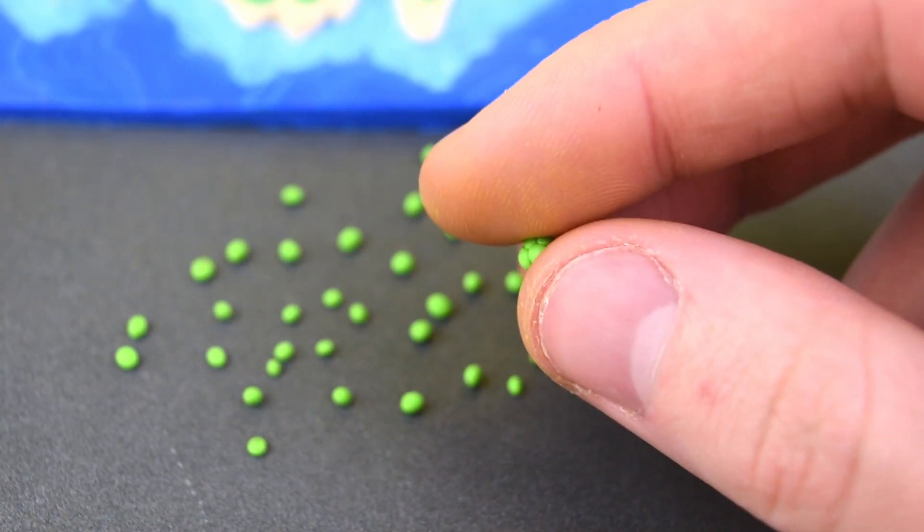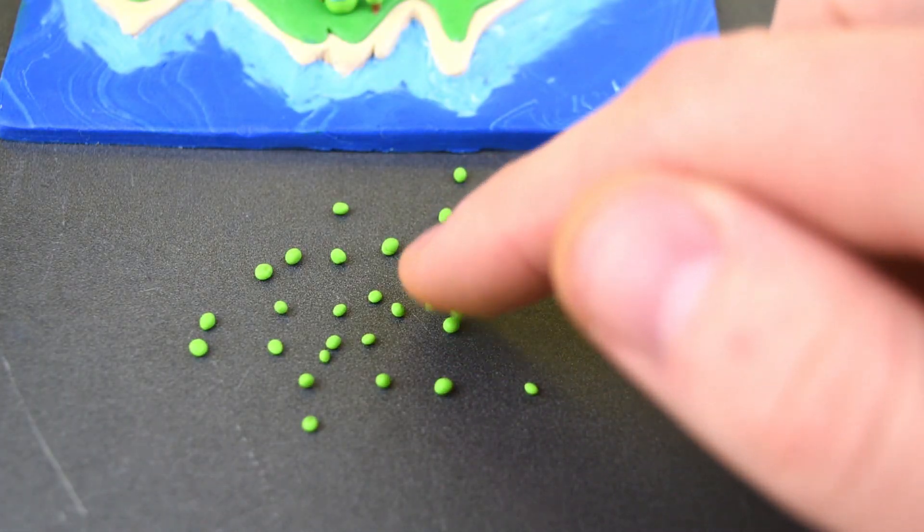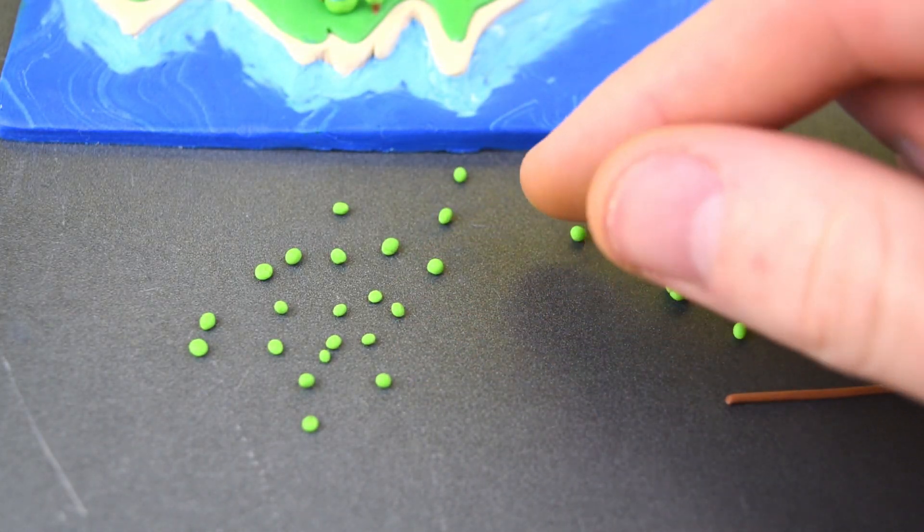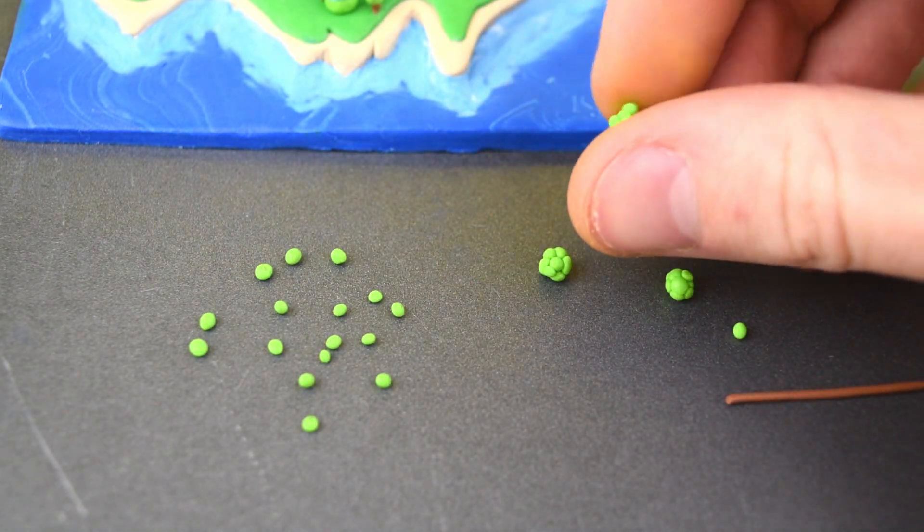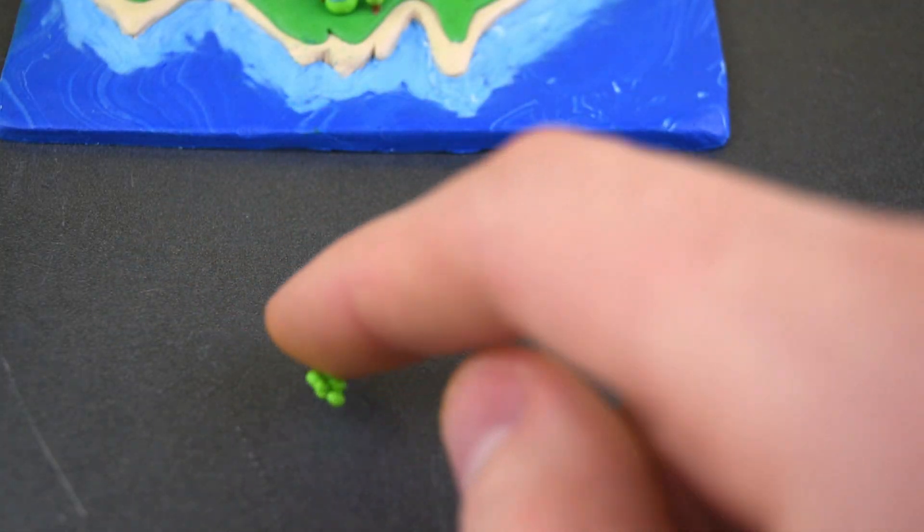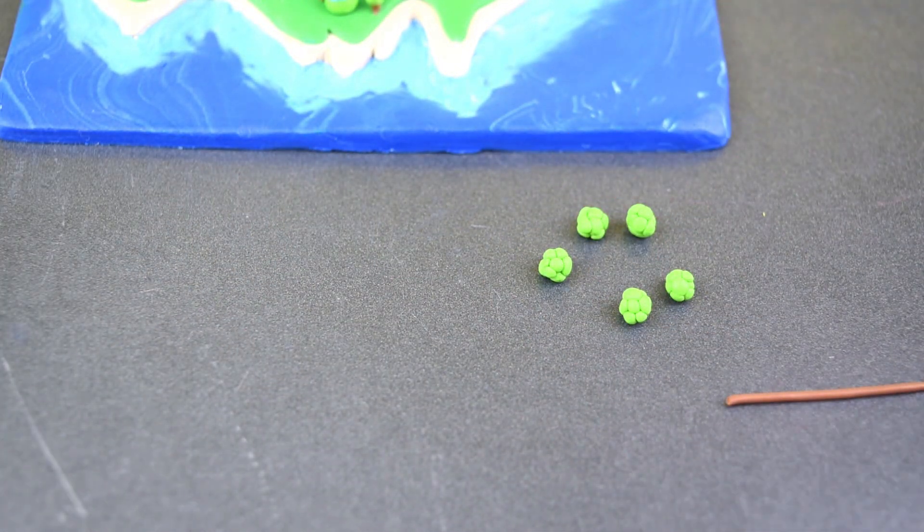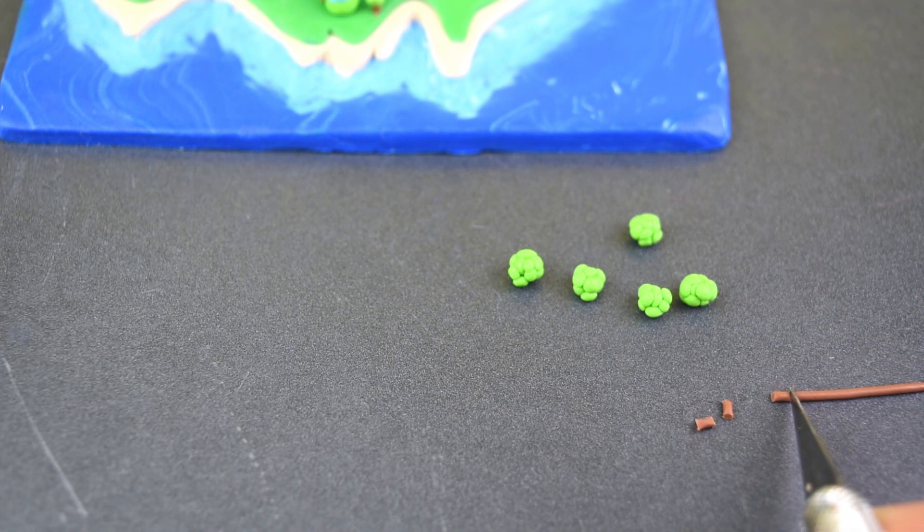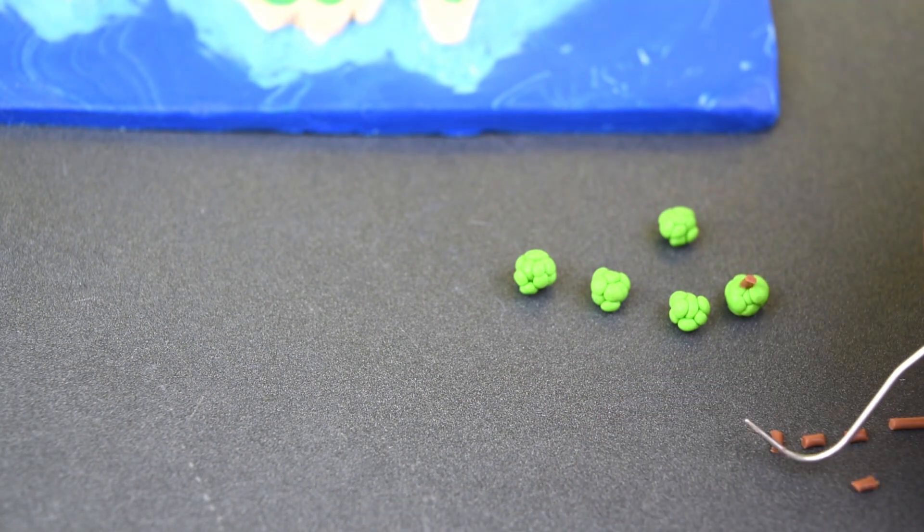Now using all of these balls of green clay, we can create these bigger trees. And this was a strategy I made when I was creating the Mario Kart stage Moo Moo Meadows. And I think that these look really nice for a tree, much better than just a big ball of clay. Let's cut out the tree stumps and get those onto the trees.